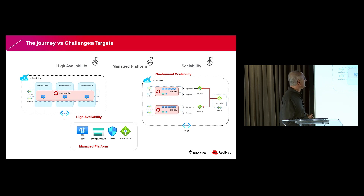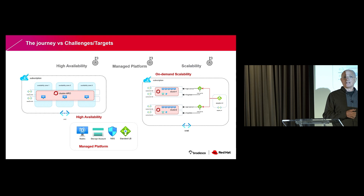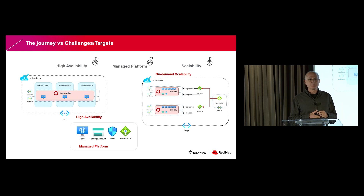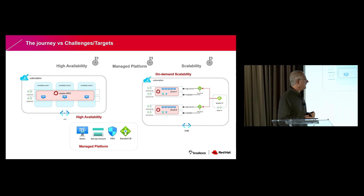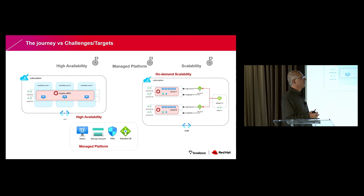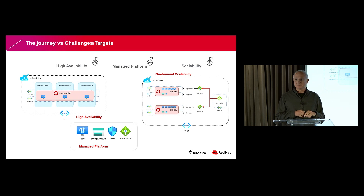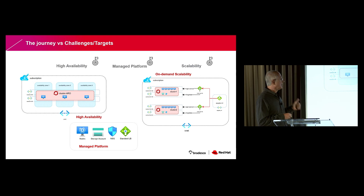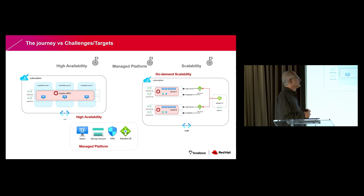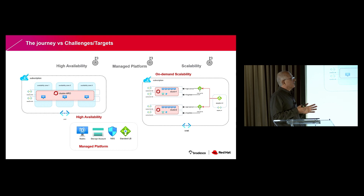Another point is about scalability. The requirement of the bank is to have at least two clusters in an active-active approach. For this, they use a load balancer included in ARO and also an application gateway so that all requests for applications running on the clusters are distributed between the different clusters. It is important to highlight the auto-scalability of the clusters, so they can increase the size of the clusters easily, and the cloud solution enables nodes and clusters to be created in a simple way.